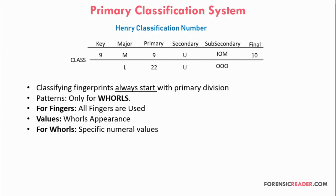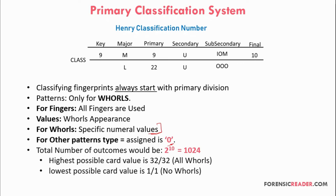The total possible outcomes for primary classification is 1,024. The highest possible card value is 32/32 — when all fingers have whorl patterns — and the lowest possible card value is 1/1 — when no whorl patterns appear.